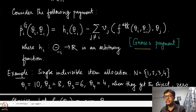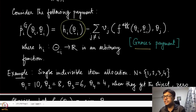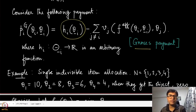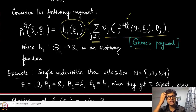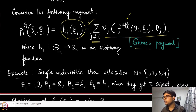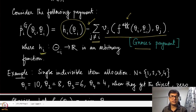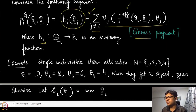We have made the point earlier that whenever a specific allocation rule is implementable, there exist some payments which implement it in dominant strategies. The allocative efficient rule maximizes the sum of the values of all agents, and we are going to construct the payments in a specific way. This particular payment structure is named after Groves, who introduced it. For player i, we define a function hᵢ that depends only on the types of all other agents θ₋ᵢ — not on θᵢ itself — and from that we subtract the sum of valuations of all agents except agent i at the efficient outcome.